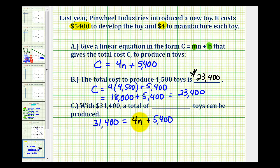So to solve for N, we'll isolate N on one side of the equation, so we'll subtract 5,400 on both sides. So here we'd have 26,000 equals 4N, and this would be zero.